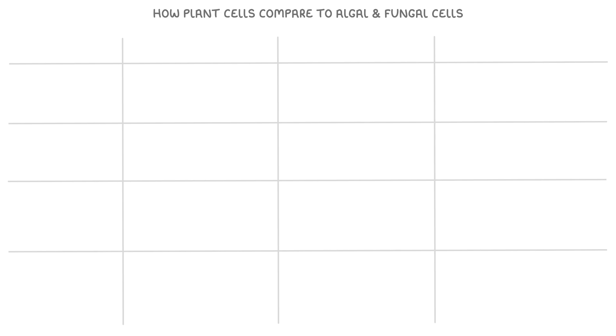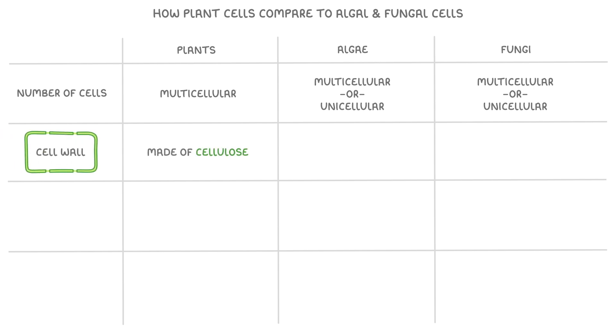Then to finish up, let's see how plant cells compare to algal and fungal cells by looking at some key features of plants, algae, and fungi side by side. Regarding the number of cells in each type of organism, whilst plants are always multicellular organisms, algae and fungi can be either multicellular or unicellular. We already know that plant cells have a cell wall that's made of cellulose, and they also have chloroplasts and a permanent vacuole.